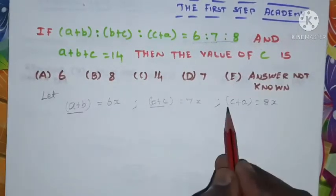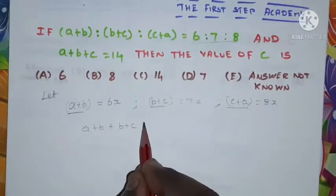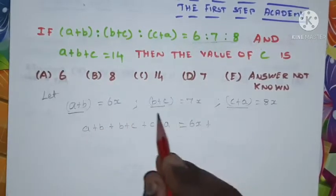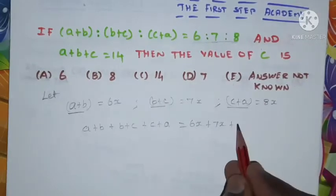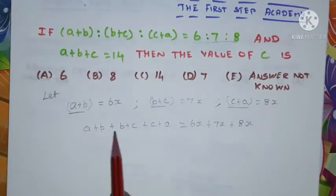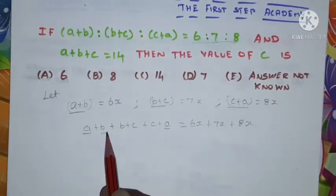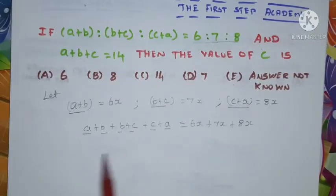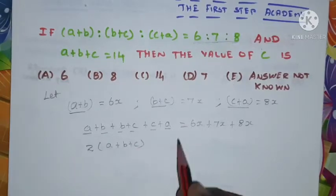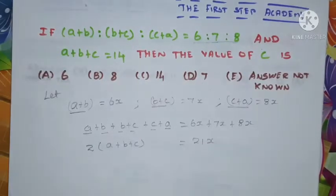Now I'm going to add all three ratios: (a+b) + (b+c) + (c+a), which equals 6x + 7x + 8x. So a+b+b+c+c+a = 6x + 7x + 8x. Looking at the left side, we have two a's, two b's, two c's — so 2(a+b+c) = 21x.